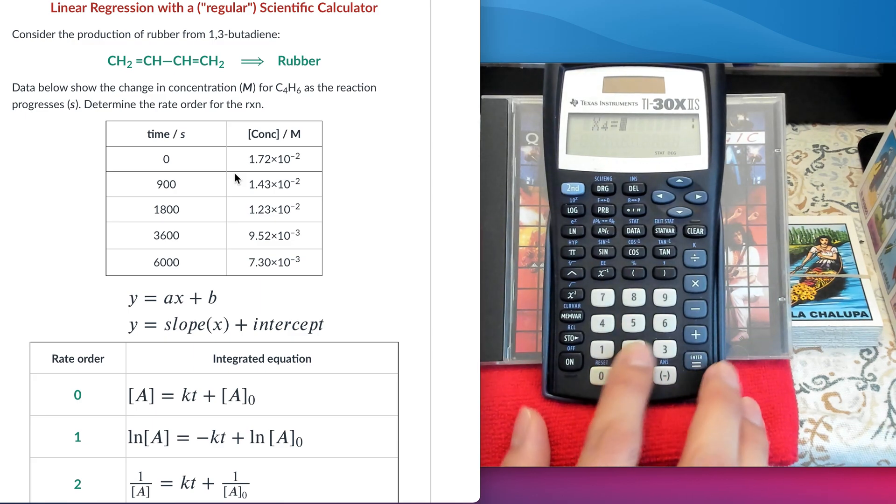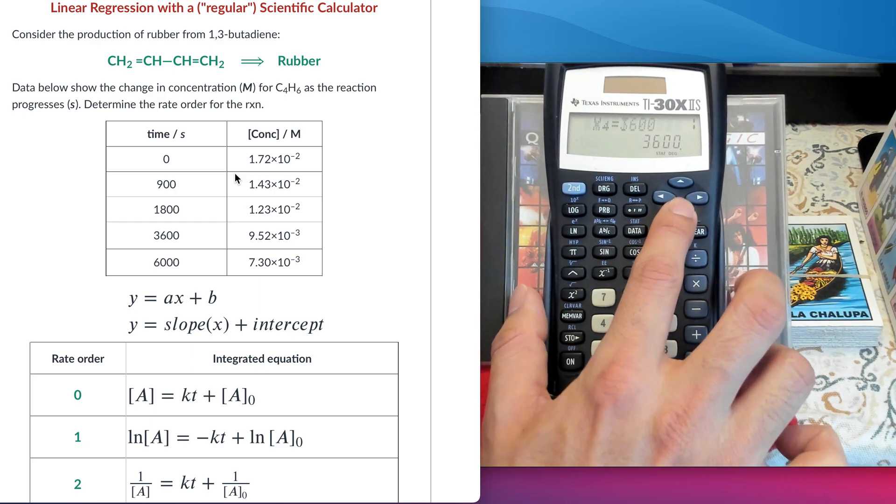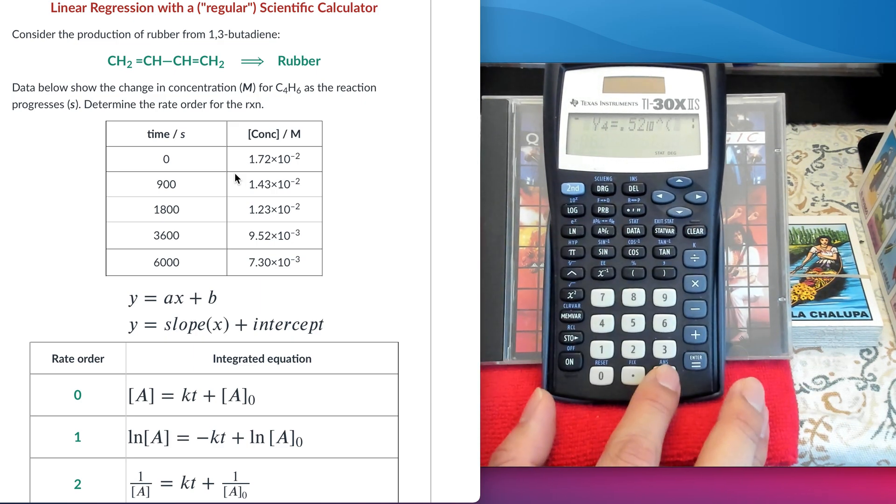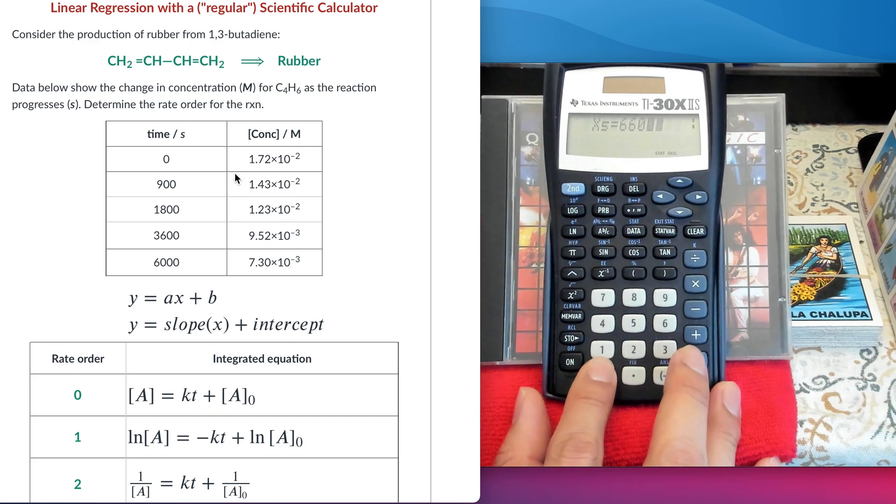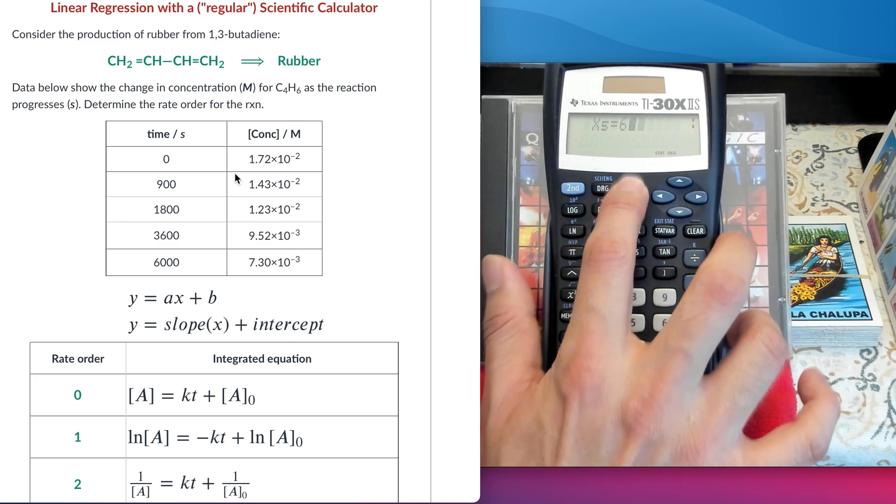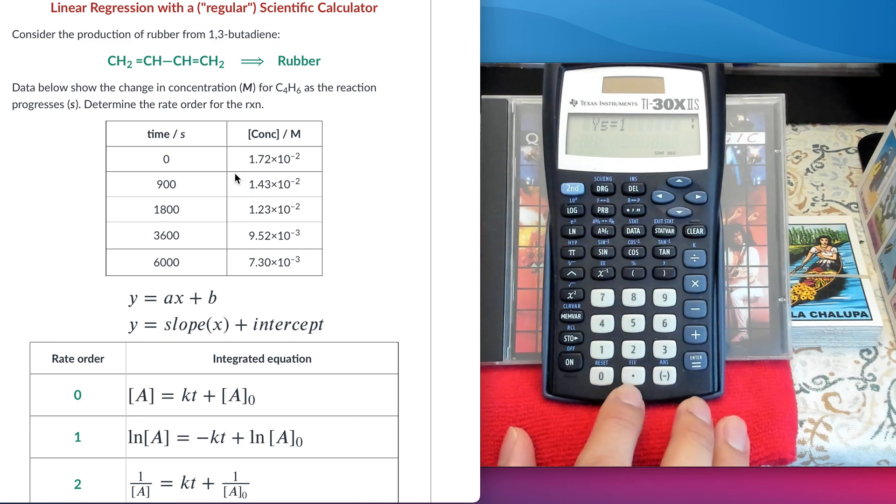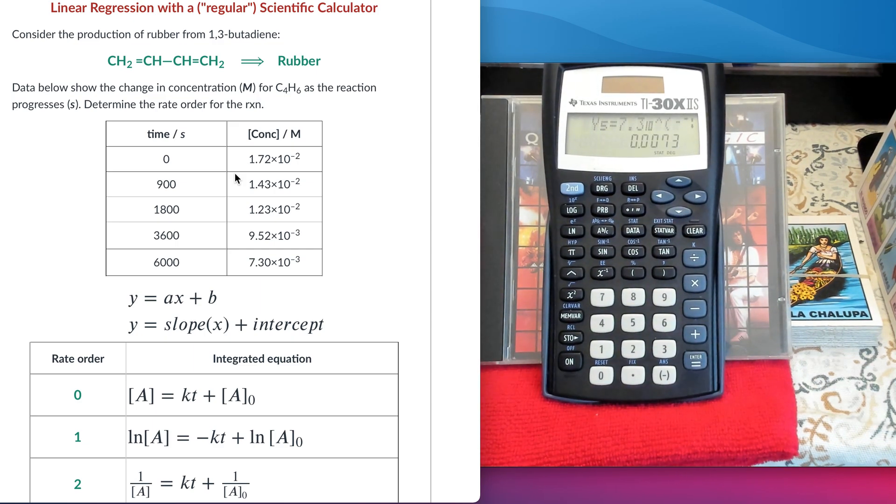We're getting close to the end of this. So, fourth data point, let's go to y, 9.52, 10 to the minus 3. And then, final point, it's 6,000. Let's... 6,000. There you go. Now it's 6,000. And then, the final y is going to be 7.3, 10 to the minus 3. That's all I have to do.